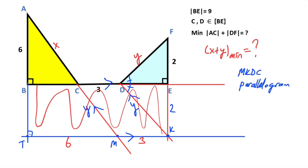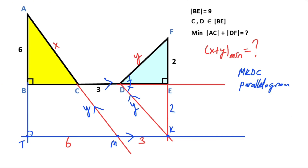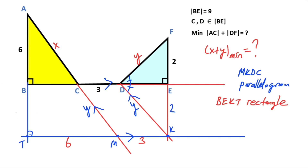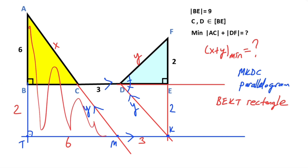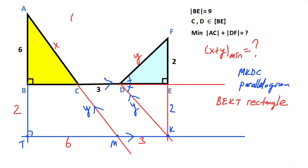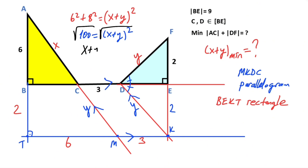If you focus on this quadrilateral, BEKT is a rectangle. That means if this length equals two, here must also equal two units. Therefore if you focus on this triangle, it is a right triangle, so we can apply the Pythagorean theorem: six squared plus eight squared equals (x plus y) squared. Taking the square root of both sides, x plus y must equal 10 units.